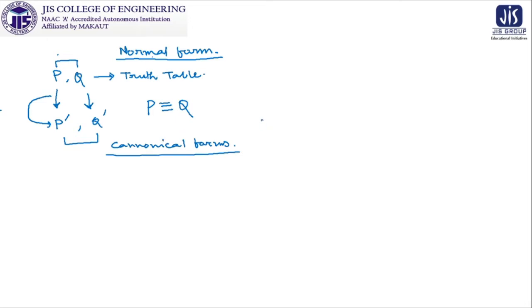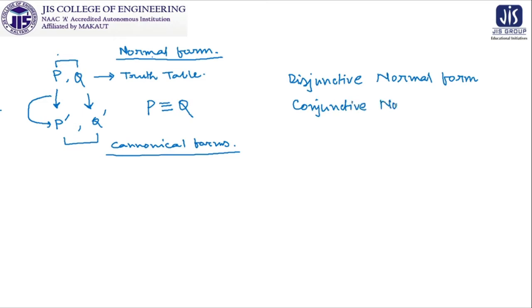There are two types of these normal forms: one is Disjunctive Normal Form and the other is Conjunctive Normal Form. In short, the first one is written as DNF and the second one as CNF. Before entering into the procedure for obtaining CNF and DNF, we want to give some basic ideas on related terms.